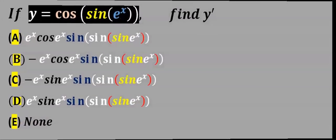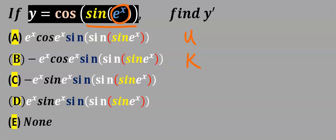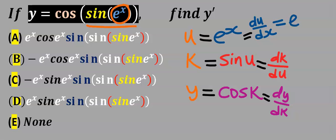Consider this question. This is u and everything here is k. Differentiate exponential x and you're going to get exponential x. Next, differentiate sin(u) and you're going to get cos(u). Next, differentiate cos(k) and you're going to get minus sin(k).